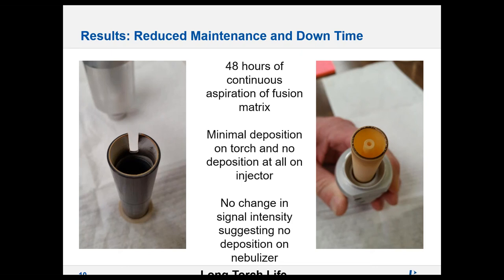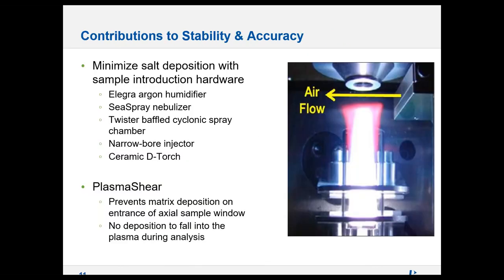Following two full days of non-stop analysis of fusion samples, we inspected the torch and injector for deposits. The outer ceramic tube had some minor salt deposition but nothing that impacted data quality or stability. The inner auxiliary ceramic tube had only trace amounts of salt deposits. Most impressively, there were no deposits at all on the injector — the customer had never seen an injector this clean after 48 hours. The nebulizer gas backpressure had not changed, indicating no deposits were forming on the nebulizer tip. Additionally, the Avio 500's plasma shear cuts off the cool noisy tail plume of the plasma, preventing deposition on the axial optics window and preventing particles from falling into the plasma.